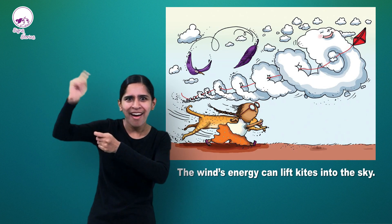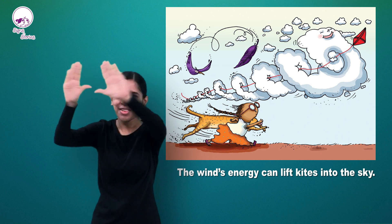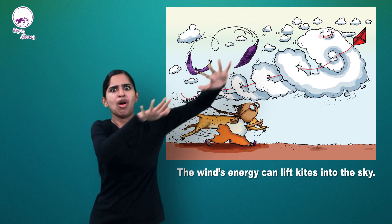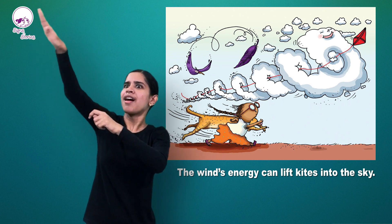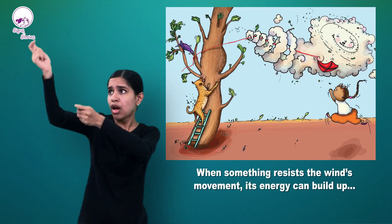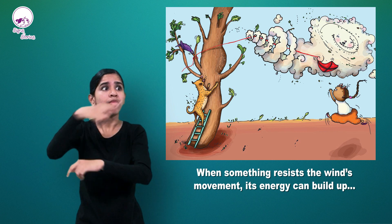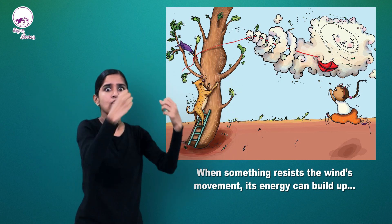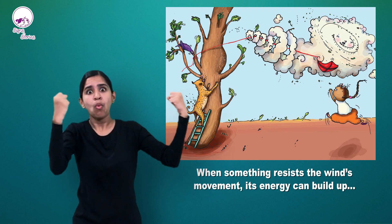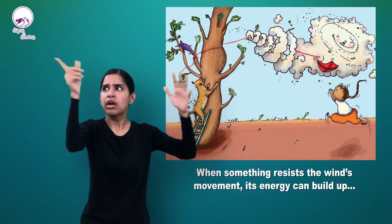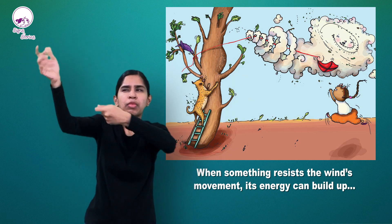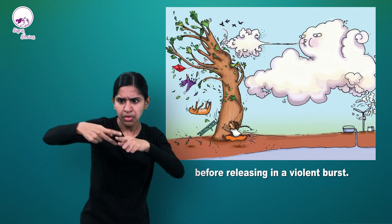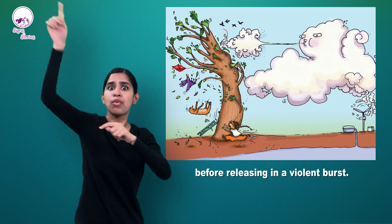The wind's energy can lift kites into the sky. When something resists the wind's movement, its energy can build up, before releasing in a violent burst.